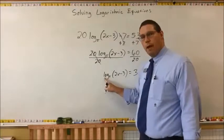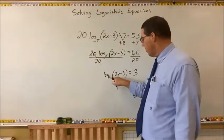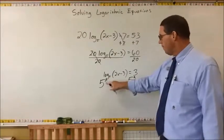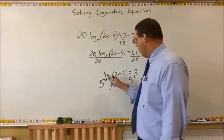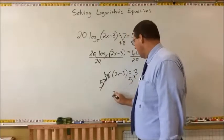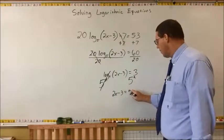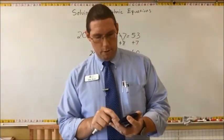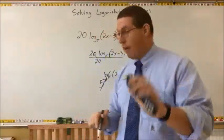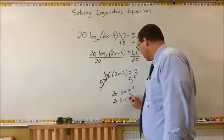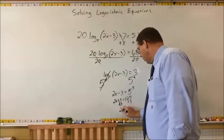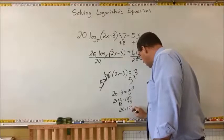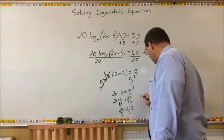Now to cancel this logarithm, I apply an exponential base of 5 to cancel a log base 5. So I put a 5 to the power of on both sides. 5 to the power of log base 5 cancels, and all I have left is 2x minus 3 equal to 5 to the power of 3, which is 125. Then adding 3 to both sides gives 2x equals 128, and dividing by 2 gives x is equal to 64.